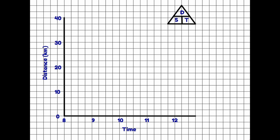The purpose of a distance-time graph is to tell the story of a journey. These graphs can look a little strange the first time you see one, so we need to understand how the graph tells that story. Along the bottom we have the time — as in a clock, not the number of hours passed — so 8 o'clock, 9 o'clock, 10 o'clock and so on. Up the side we have the distance in kilometers. Importantly, the distance is not the total distance traveled; it is the distance away from the beginning of the journey.